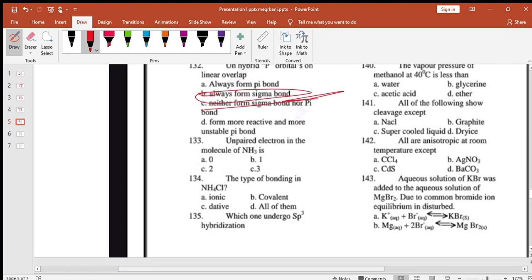Unpaired electrons in NH3: there are no unpaired electrons in NH3. The type of bonding in NH3 is repeated in NH4Cl.